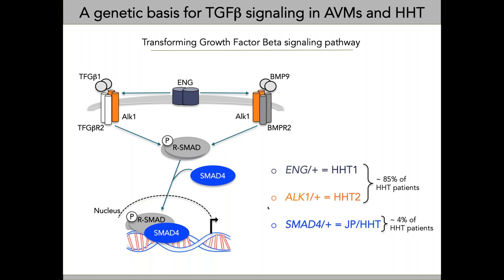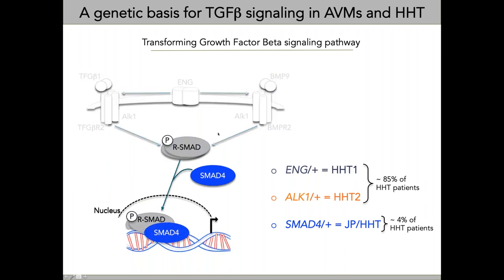With endoglin and ALK1 — these are heterozygous loss-of-function mutations — up to around 85% of HHT patients have mutations in these genes. A lower percentage of patients have a combined syndrome of juvenile polyposis and HHT when they have a SMAD4 mutation. When I got interested in HHT, most research was focused on the ligand-receptor interface, but we became more interested in the downstream effectors of this pathway involved in HHT and AVM formation — that's something we've become very interested in understanding.